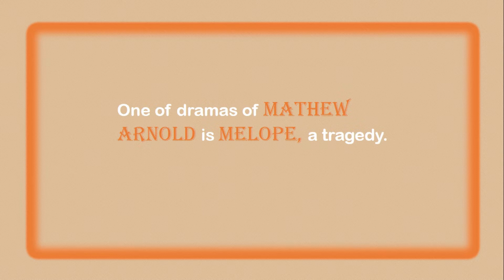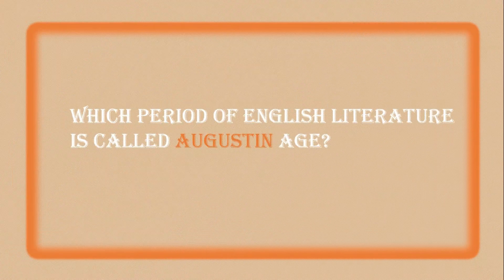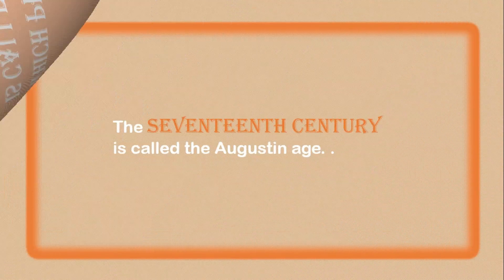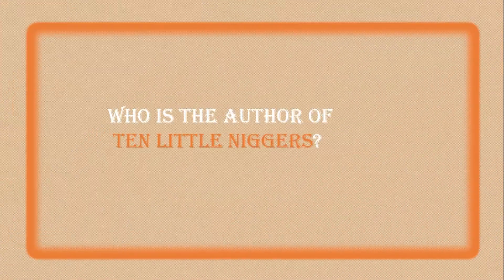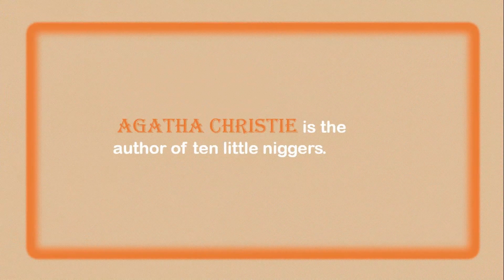Question 5: Name a drama of Matthew Arnold. One of the dramas of Matthew Arnold is Merope — Merope is a tragedy. Question 6: Which period of English literature is called the Augustan Age? The 17th century is called the Augustan Age. Question 7: Who is the author of Ten Little Indians? Agatha Christie is the author of Ten Little Indians.